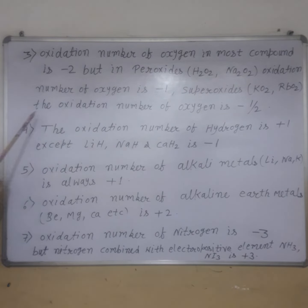In superoxides like KO2 and RbO2, the oxidation number of oxygen is minus 1/2. The oxidation number of hydrogen is plus 1, except in hydrides like LiH, NaH, and CaH2 where it is minus 1. Oxidation number of alkali metals is always plus 1.